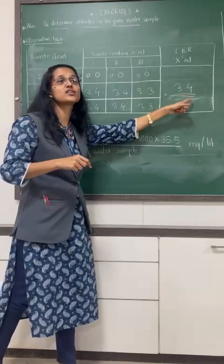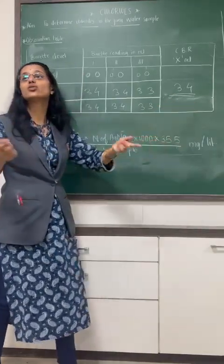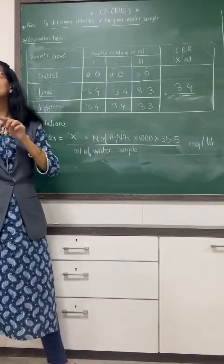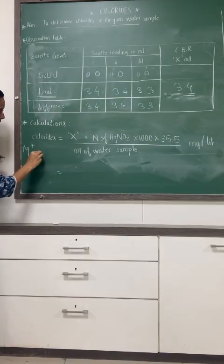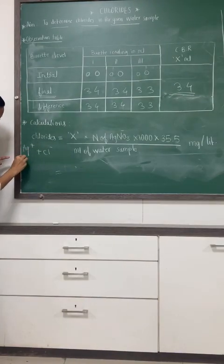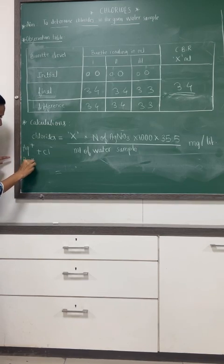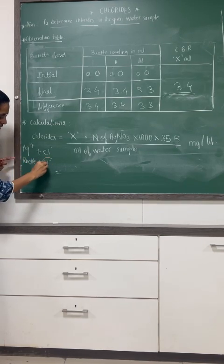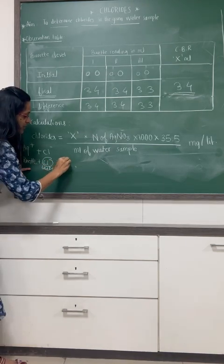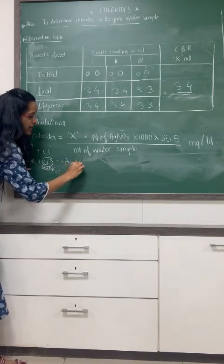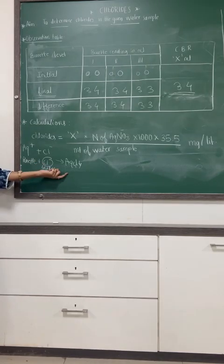This ml of AgNO3 is required to consume the Cl minus. The Ag from the burette will combine with the chloride ion from the water sample in the conical flask, and it will form the AgCl precipitate.